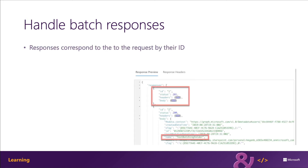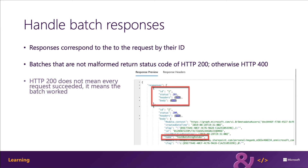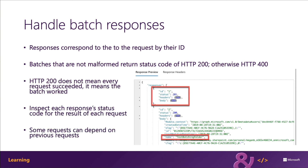A batch request results in a single response that includes a collection of individual results for each request. Each response object in the response collection has an ID that matches the corresponding request ID in the original request. This way you can check the status of each request you receive in the response.